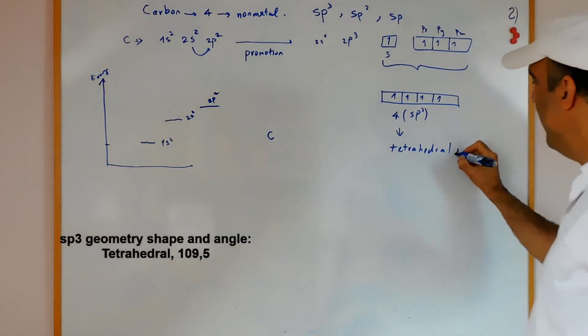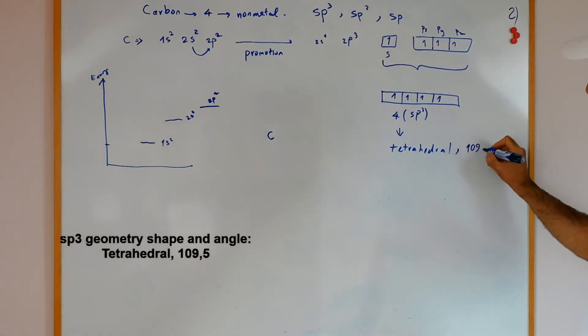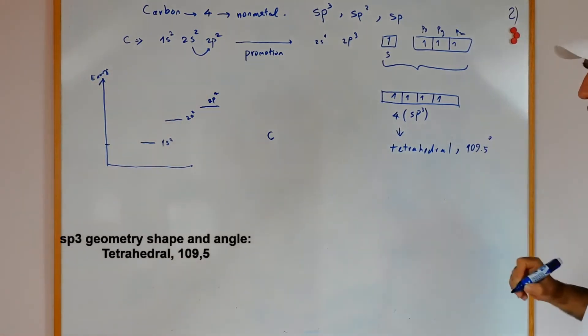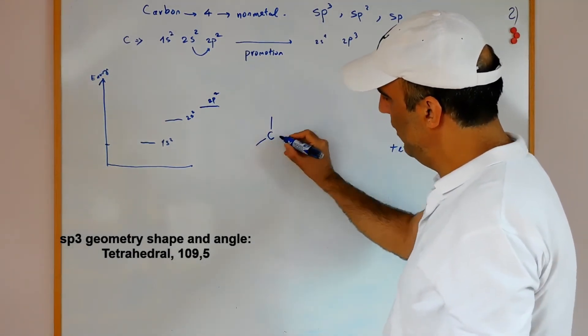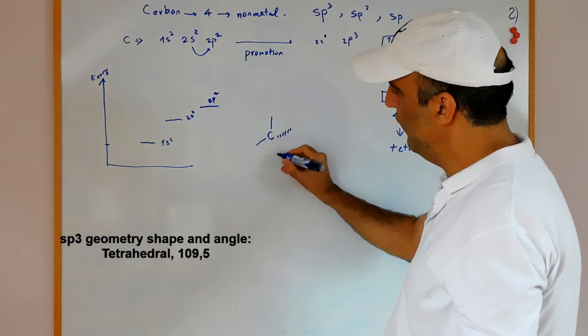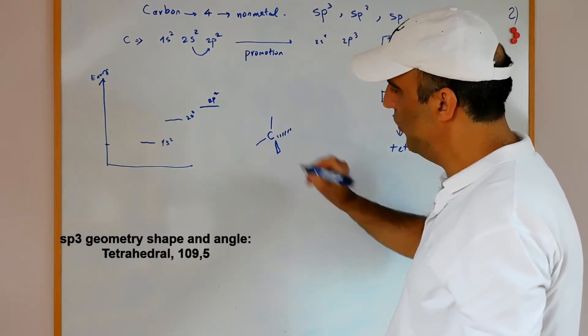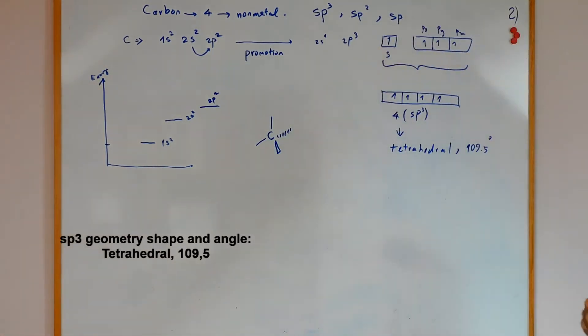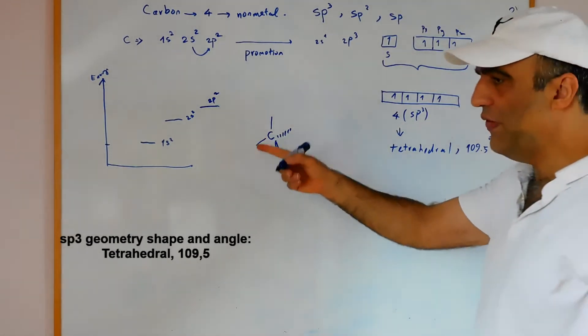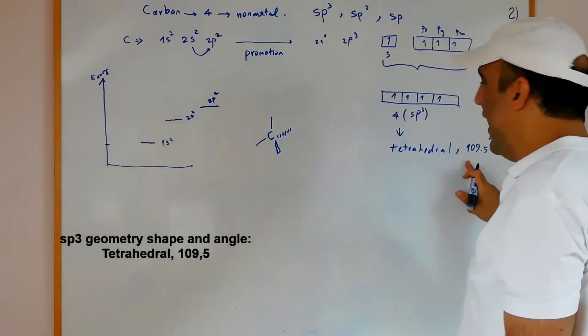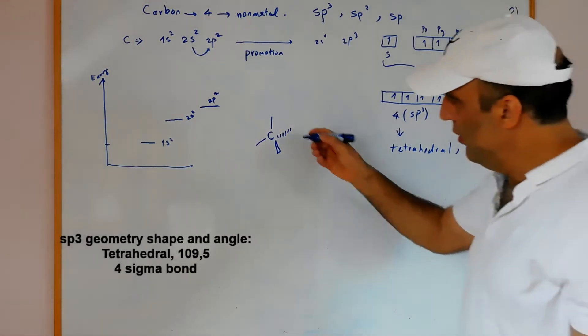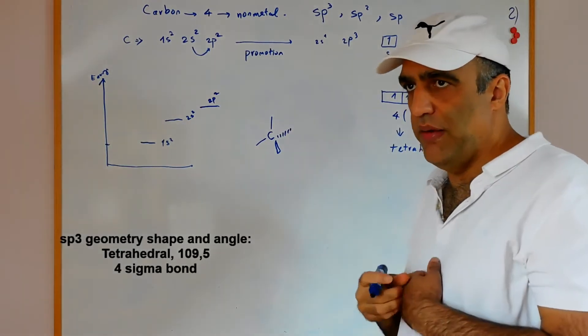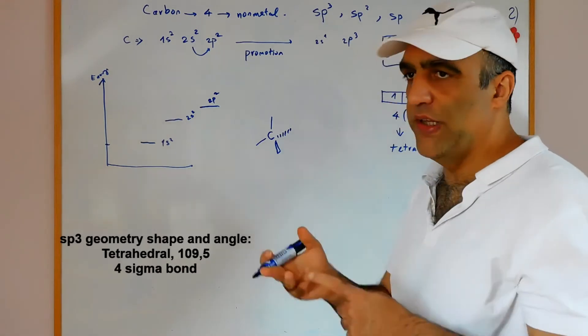In space it must have the same angle and it will be with the shape of tetrahedral. The angle must be 109.5 degrees. For example, one bond, second bond, one is far from us and one is closer to us. This carbon is sp3 and all angles are 109.5 and the shape is tetrahedral.